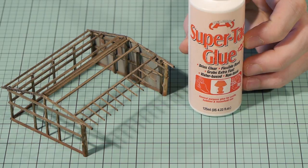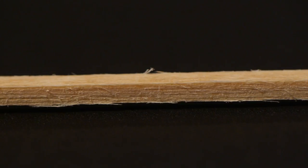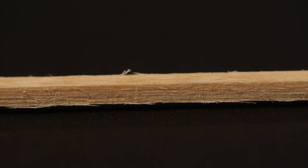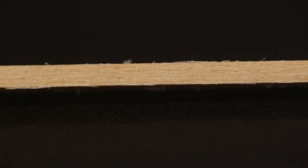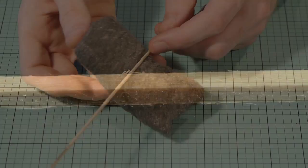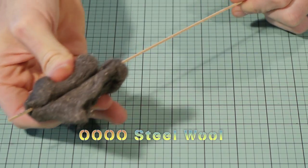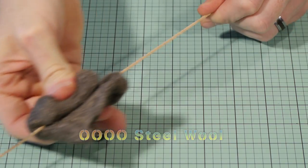SuperTac glue was used to glue the structure together but before assembling the shed I prepared the strip wood. You can see here small pieces of fuzz on the piece of wood and to remove them I passed it through some steel wool and the difference is quite dramatic.